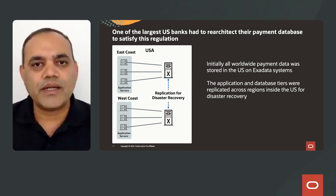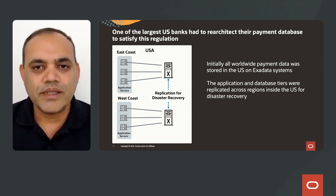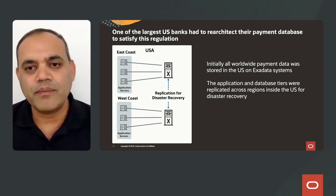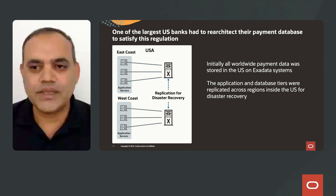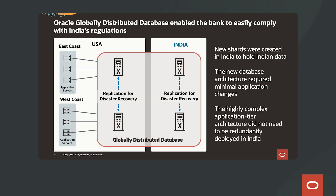One of the largest U.S. banks had to re-architect their payment database to satisfy this regulation. Initially, all worldwide payment data was stored in the U.S. on Exadata systems, with applications and the database tier replicated across U.S. regions for disaster recovery. Oracle's globally distributed database enabled the bank to easily comply with India's regulations. New shards were created in India to hold India data, requiring minimal application changes. The highly complex application tier architecture did not need to be redundantly deployed in India.